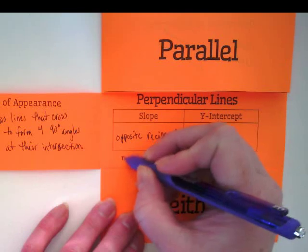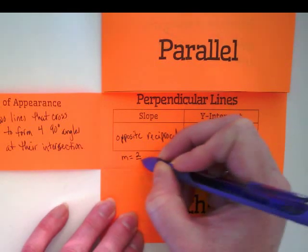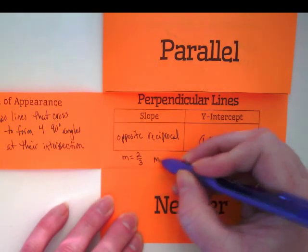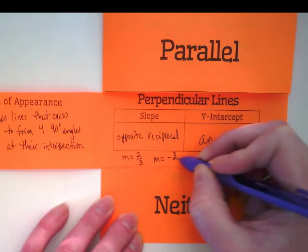So if I have a slope that is two-thirds on one of the two lines, the slope on the other line is going to be negative three over two.